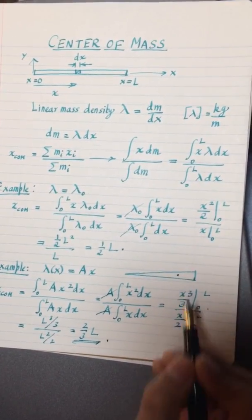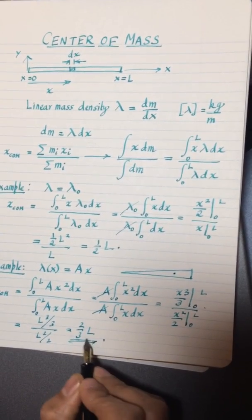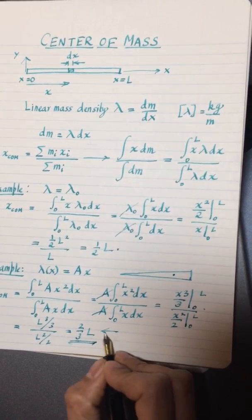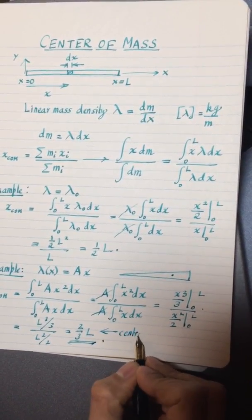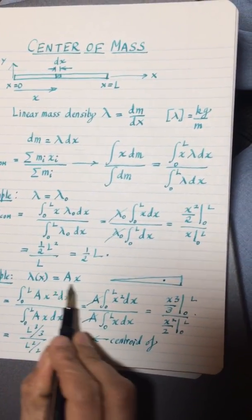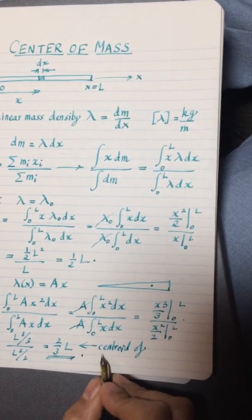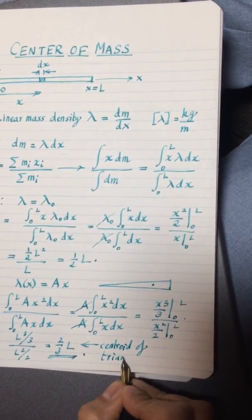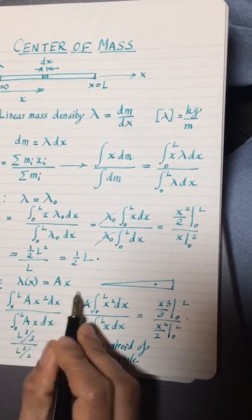And this by the way is the center of mass of a triangle also, it is the centroid of a triangle. So that model I was talking about of making a rod of this type ends up giving us a centroid of a triangle, and if you have any other function of x you obviously keep building it up.